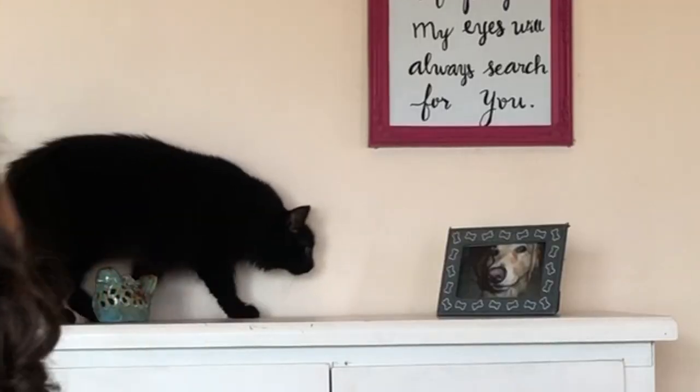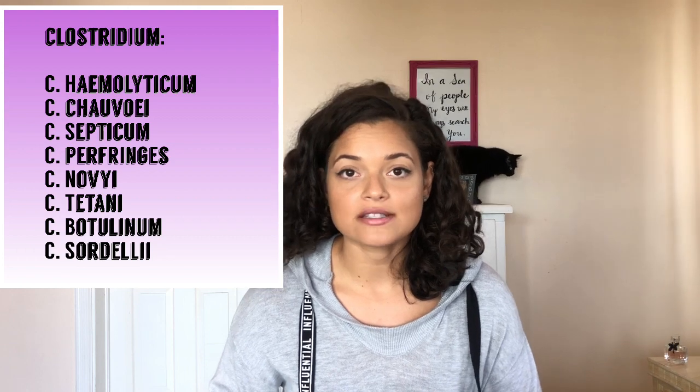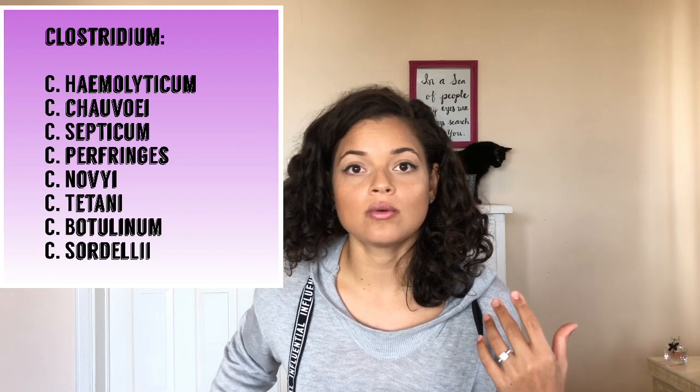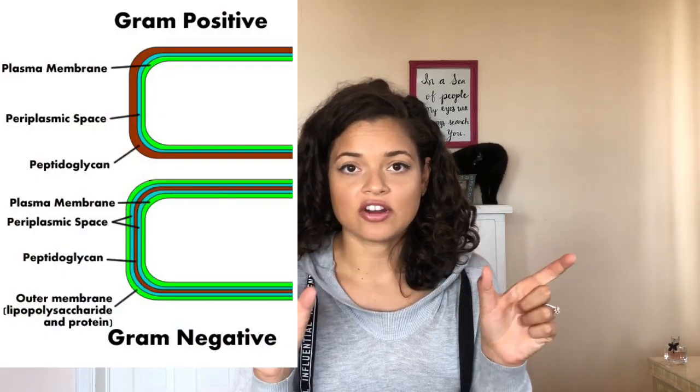Today I wanted to talk about clostridial diseases. These diseases aren't really difficult to understand conceptually — what's difficult is just the memorization of which bacteria causes which disease. Clostridium is a bacteria that is anaerobic, gram positive, rod shaped, and ubiquitous. They are also spore forming. Gram positive means their cell wall is thicker than a gram negative bacteria, and when you stain them under a microscope, they're going to show a purple stain. Anaerobic means they don't need oxygen to survive.